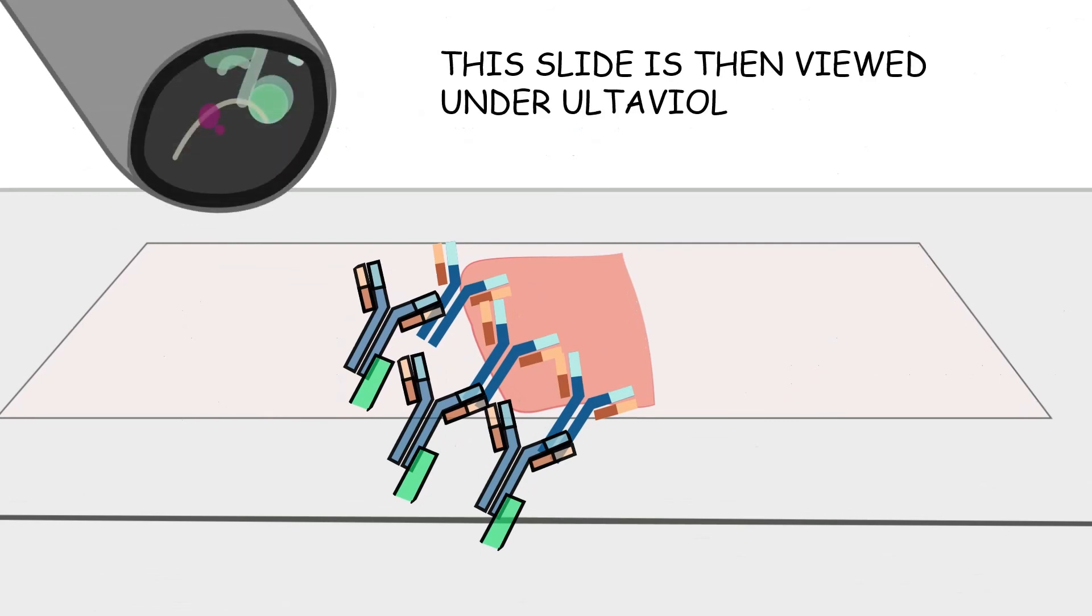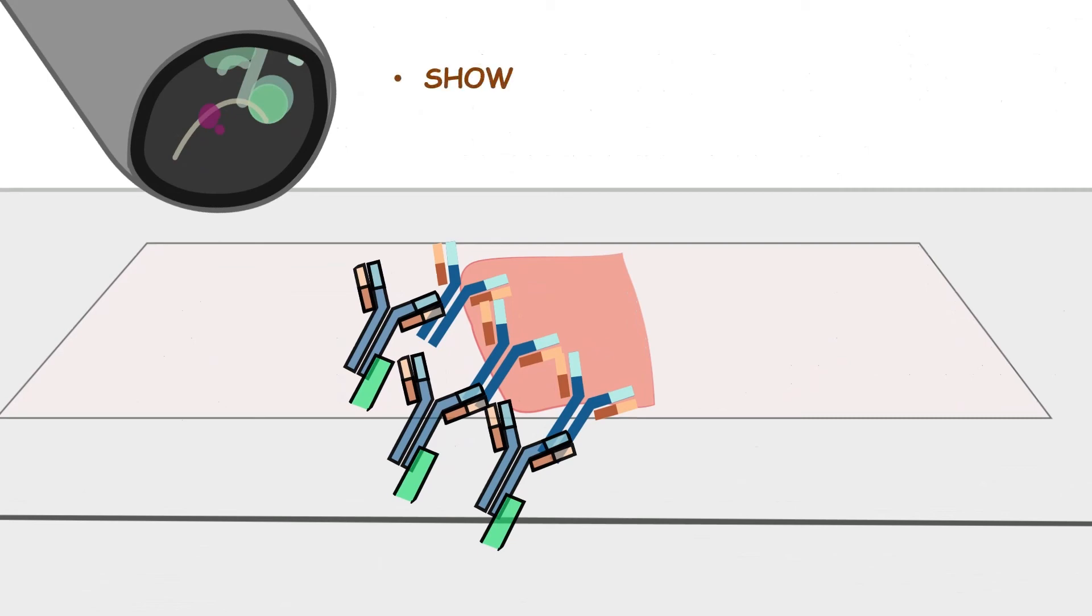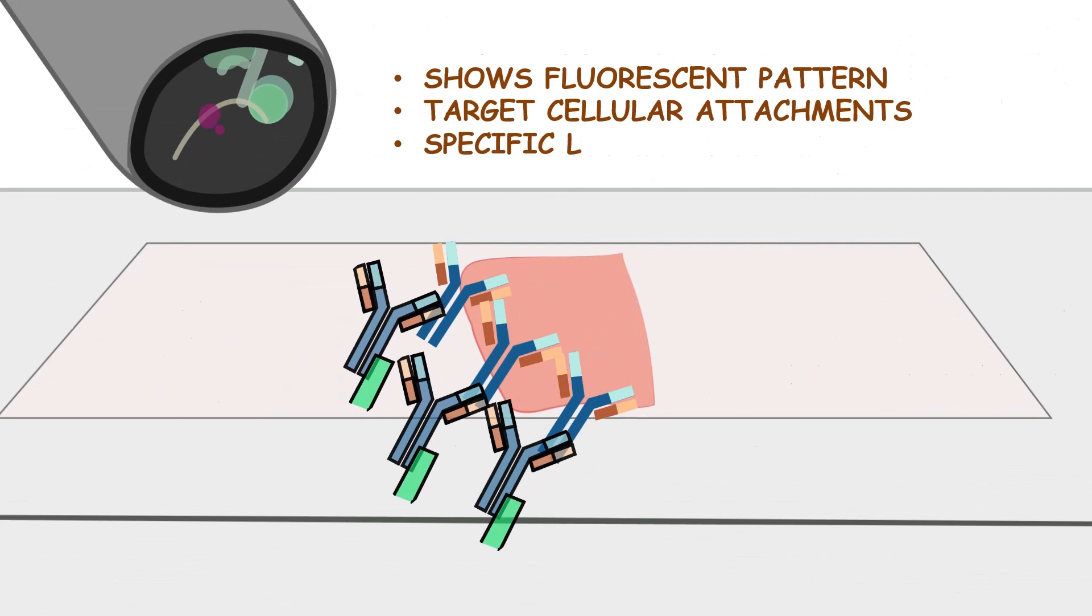This slide is then viewed under ultraviolet light in the microscope and specific patterns are viewed according to the immunological disease being tested. As you see, the anti-human immunoglobulins have arranged themselves according to the autoantibodies. It helps show off the fluorescent pattern and indicate the cellular attachments against which autoantibodies have been formed. It also helps locate their specific sites.